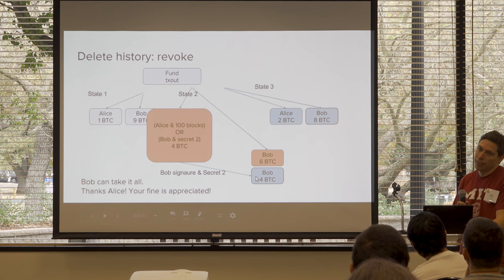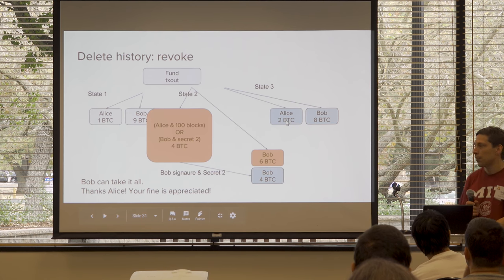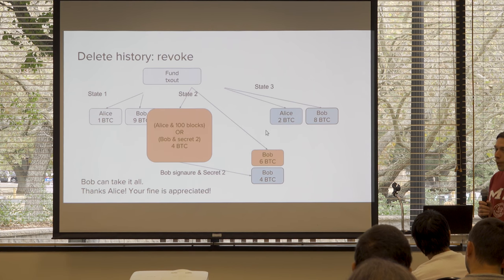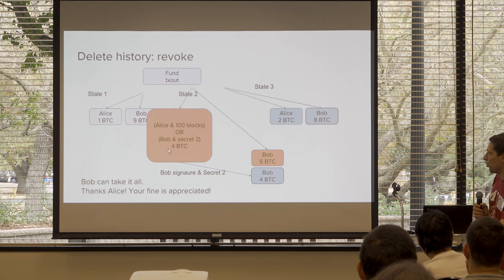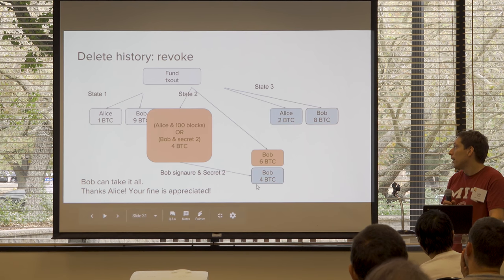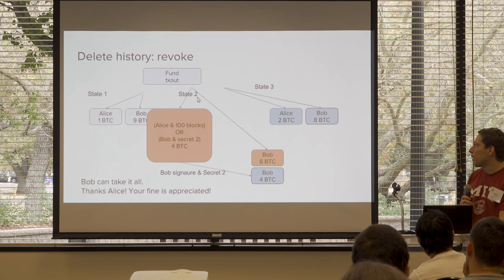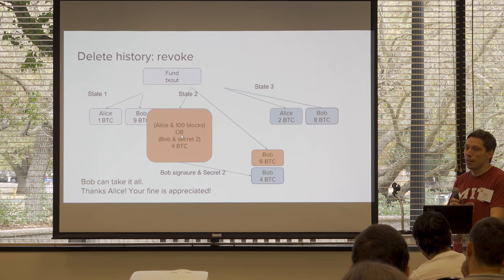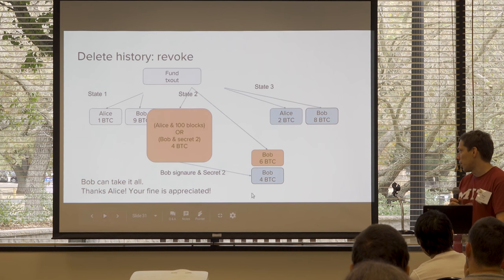The reason for the 100 block delay is so that Bob has a chance to grab those coins if Alice broadcasts an old state. Alice has to wait, but Bob doesn't. Bob's software needs to immediately see that an old state was broadcast and automatically use the secret to grab the funds. Alice has to wait 100 blocks. Bob can also put an enormous fee on this transaction — Bob's greedy and wants the extra four coins, so he's willing to pay like an entire Bitcoin worth of fees to get them confirmed quickly.